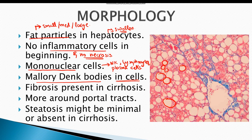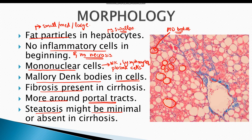As you can see, this hepatocyte contains amorphous eosinophilic bodies known as Mallory-Denk bodies. Once the disease progresses, fibrosis is also present in certain cases, more so around the portal tracts. As you can see, these bluish-colored areas indicate fibrosis. In a completely cirrhotic liver, steatosis might be minimal or even absent. Pathologic steatosis occurs when more than 5% of hepatocytes are involved.